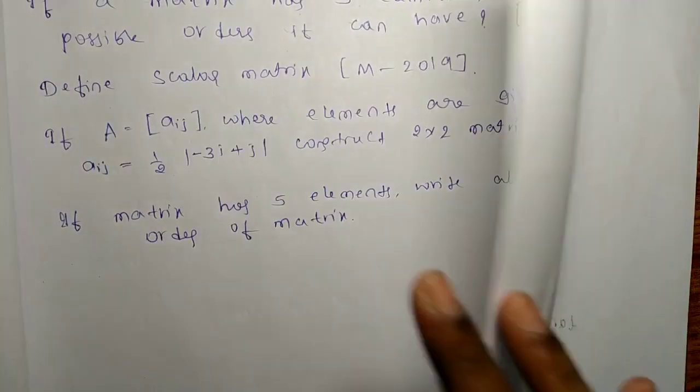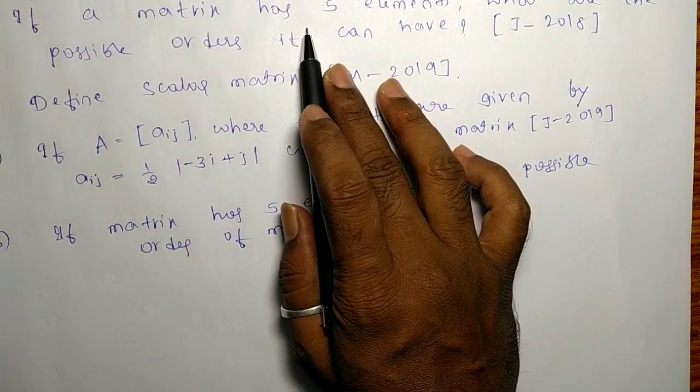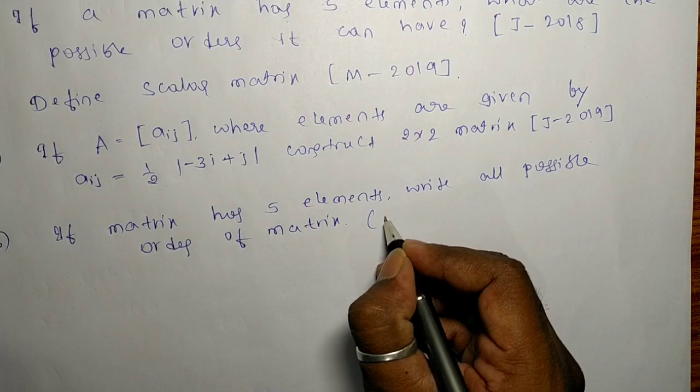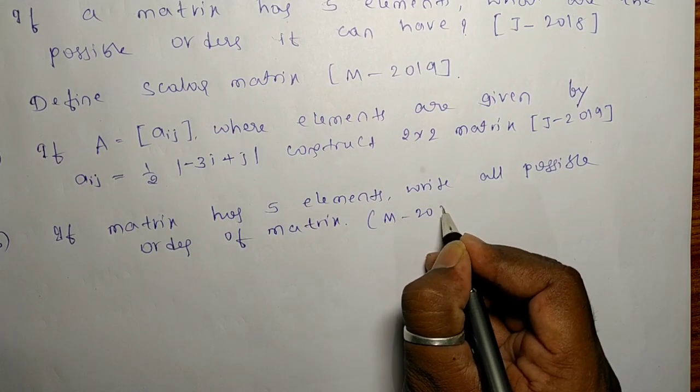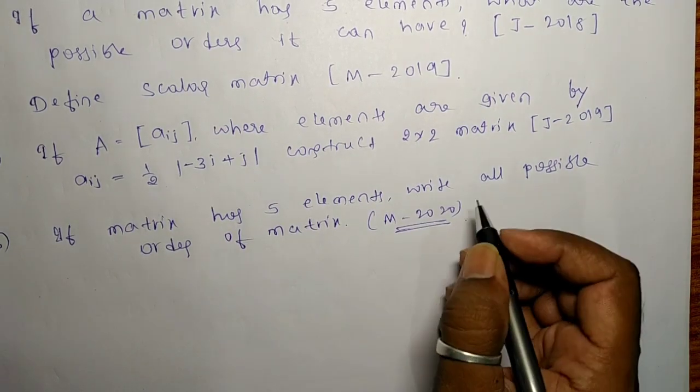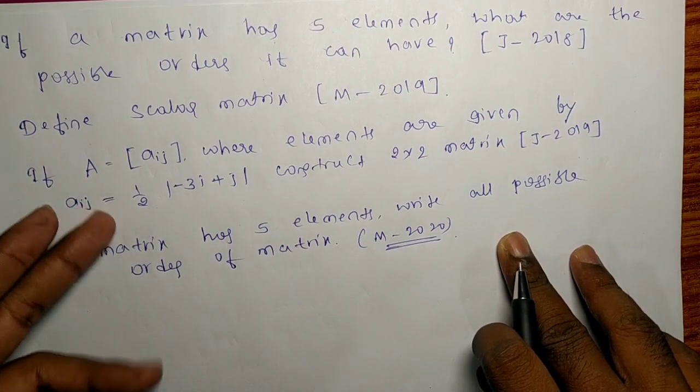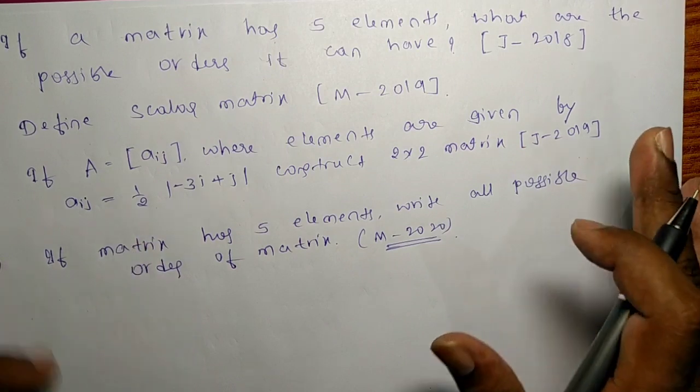Finally, last five minutes I'll show the same question. In March 2020, only one mark question in the corner, again same question repeated. Scalar matrix definition, the matrix 2x2 matrix construction for the particular term, special problems are there.